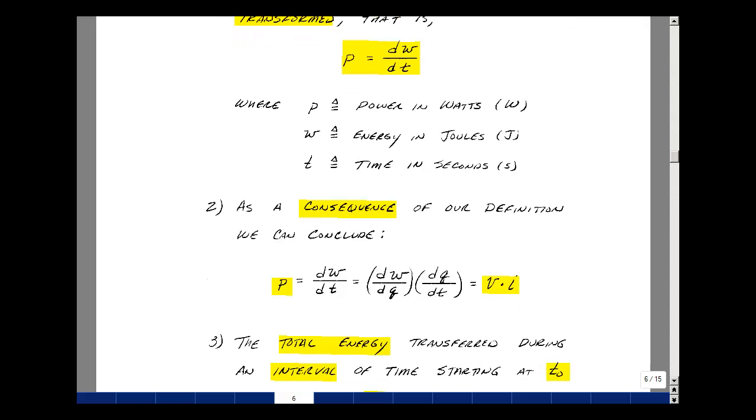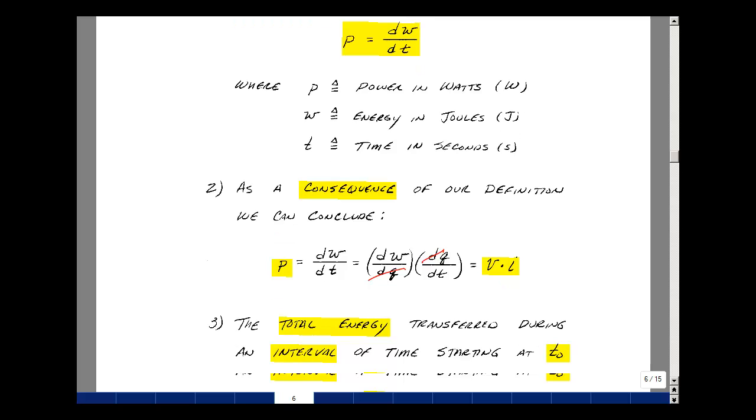As a consequence of our definition of power as the change in energy per change in time, we can also use our two previous definitions of voltage and current, which is the change in energy per change in charge, and the change in charge per change in time. These drop out, and we get the change in energy per change in time. But that's our voltage times the current, so power is voltage times current.